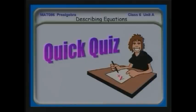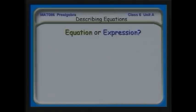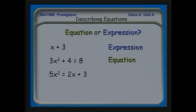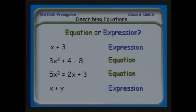For algebra or science, not only must the numbers ultimately match, but the units must also match for you to have a true equal. Quick quiz: is each string of symbols an equation or expression? X plus 3 — that's an expression. 3x squared plus 4 equals 8 — that's an equation because there's an equal sign. 5x squared equals 2x plus 3 — an equation. And x plus y — that's an expression.